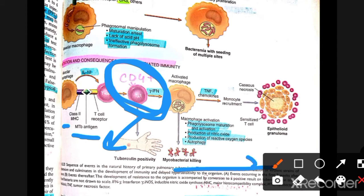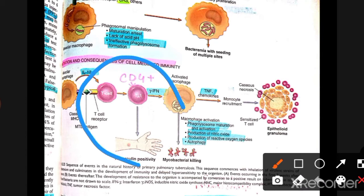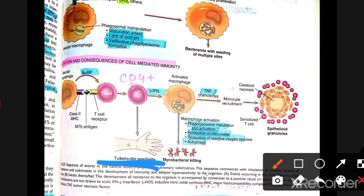This is how we kill the bacteria. CD4-positive T helper cells are essential — without them, as in HIV patients, we cannot mount an adequate response, leading to secondary TB and systemic spread. When we test the tuberculin skin test and get a positive result, it indicates functional CD4-positive T helper cells and good immunity.